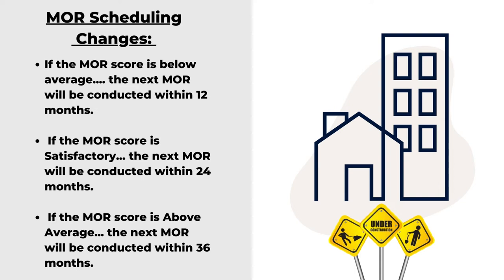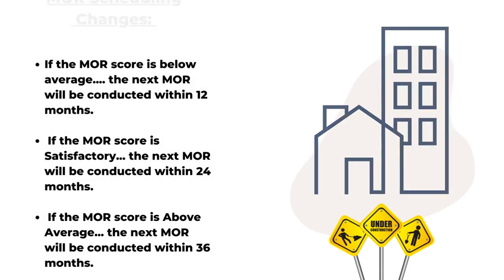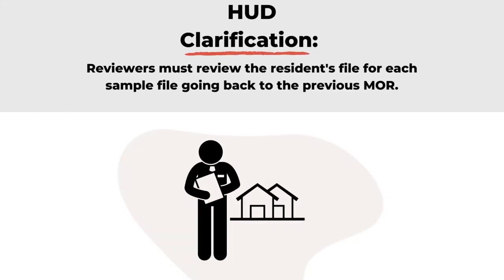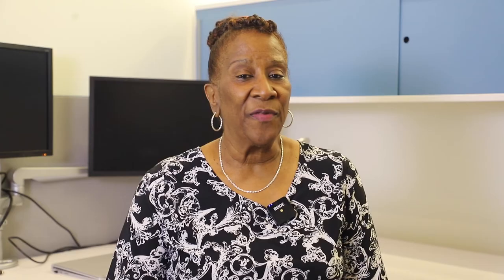If the score on the MOR conducted on or after the effective date is above average, the next MOR will be conducted within 36 months. HUD has also clarified that reviewers must review the residence file for each sample file going back to the previous MOR. So if the last MOR was three years ago, the file selected will be reviewed for compliance for the current and the three-year period between MORs.